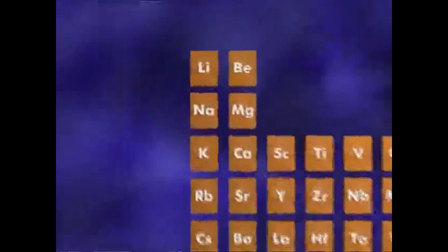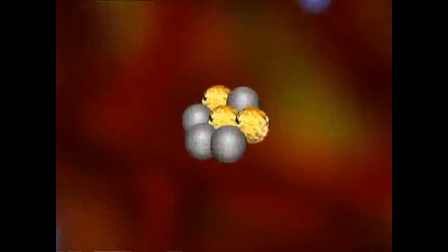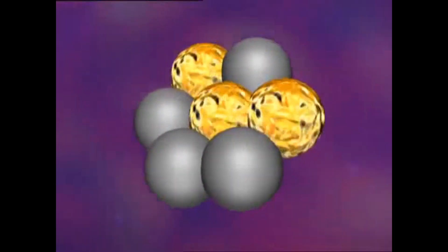The next element along the periodic table is lithium. Orbiting round each lithium atom are three electrons. In the nucleus, there are three protons and four neutrons.